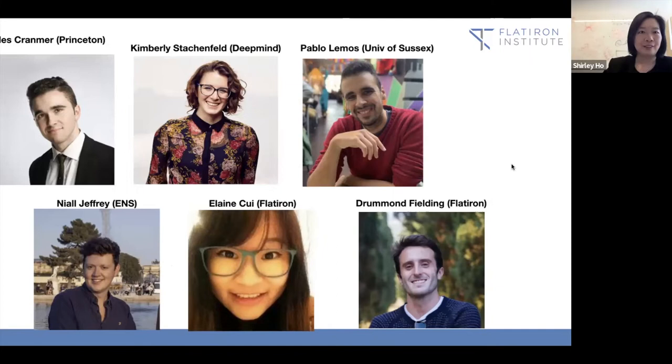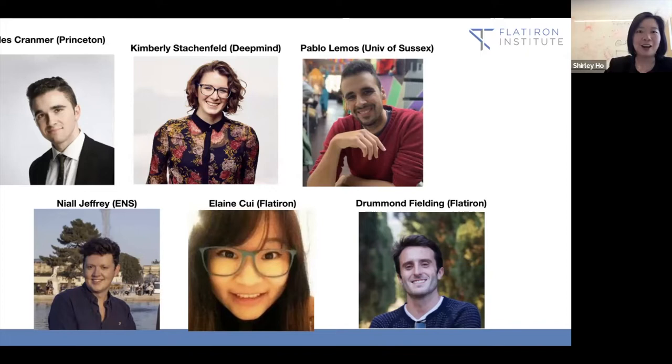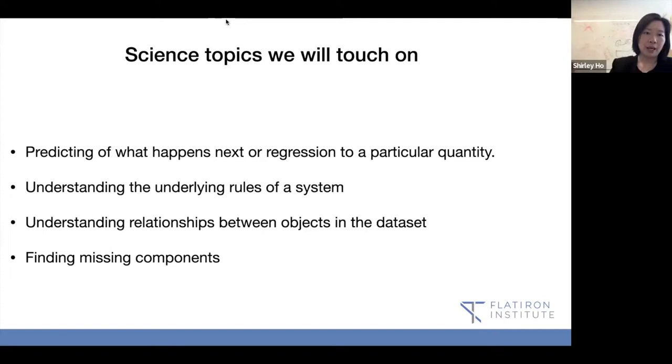So what science topics we'll touch on today. I'll talk about predicting what happened next or regression to a particular quantity. We also want to understand the underlying rules of a system that we observe. We sometimes want to find missing components or regress to understand what the missing component should be. I'll show some results that we have shown recently to be very useful to use deep learning to accelerate either the predictions or simulations or how to do much better.